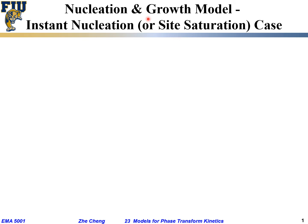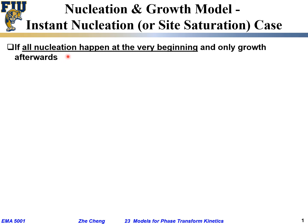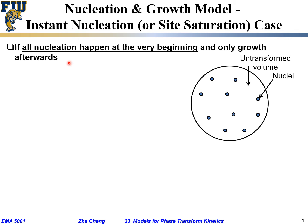Still for the nucleation-growth model: if all nucleation happens at the very beginning, and after time t = 0 there is only growth, then we have a situation illustrated here — the white portion is the untransformed volume and the small nuclei in blue are individual nuclei.